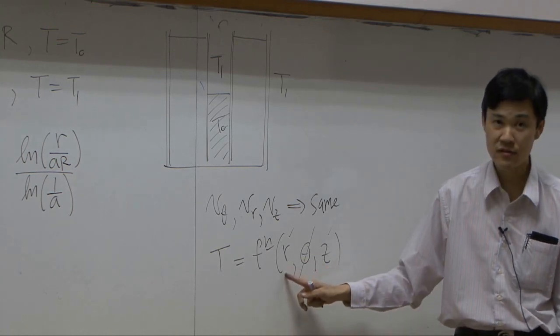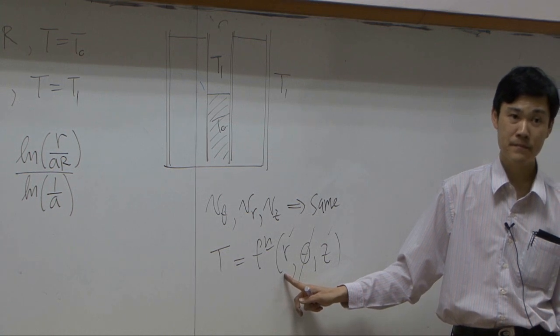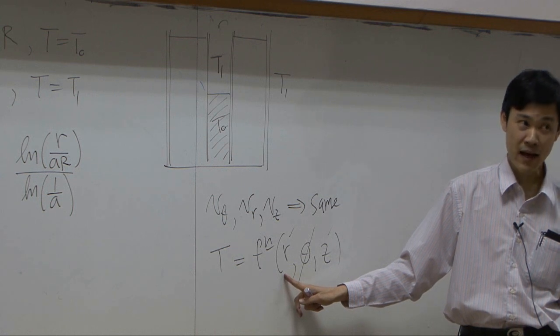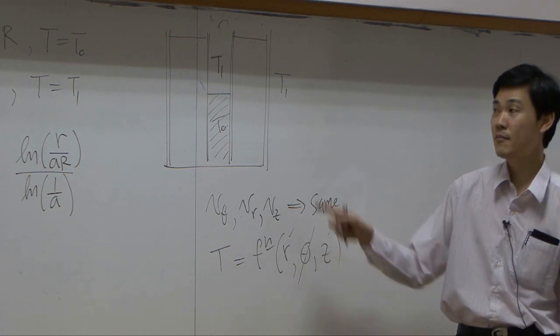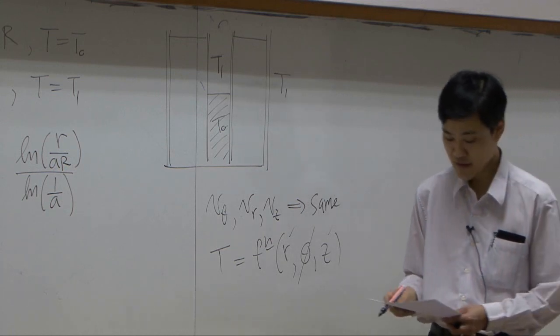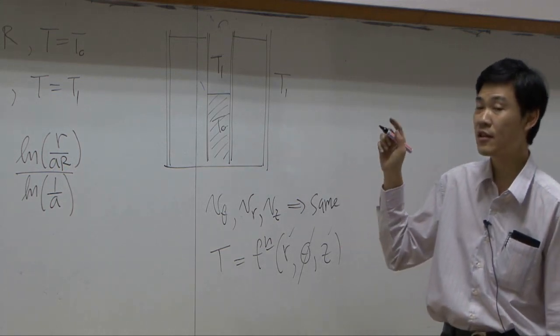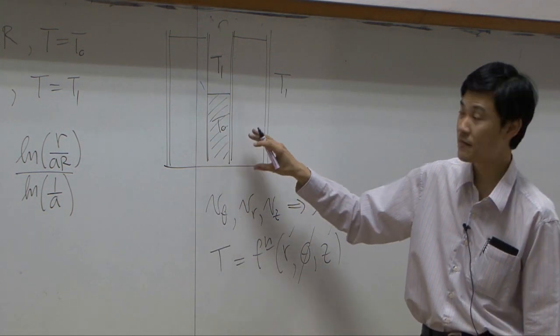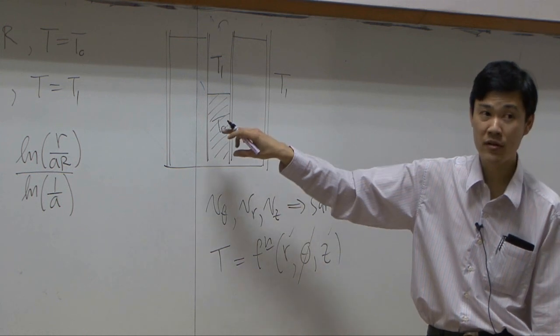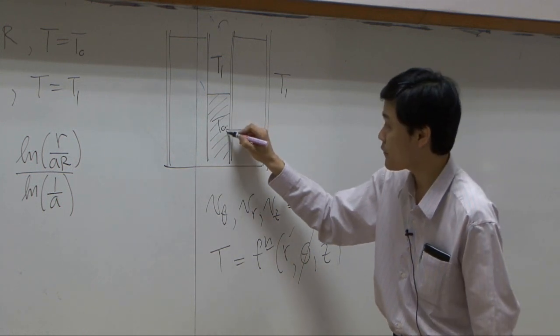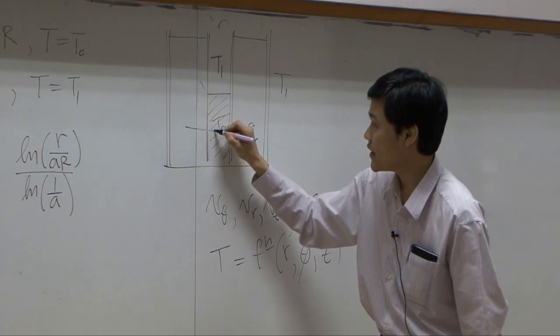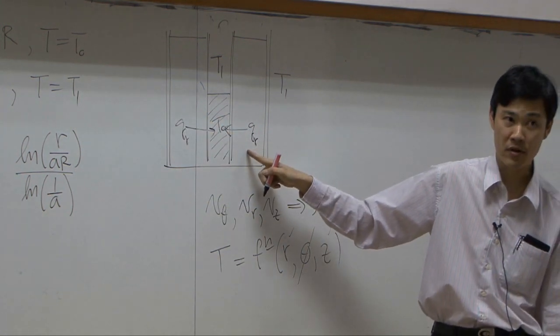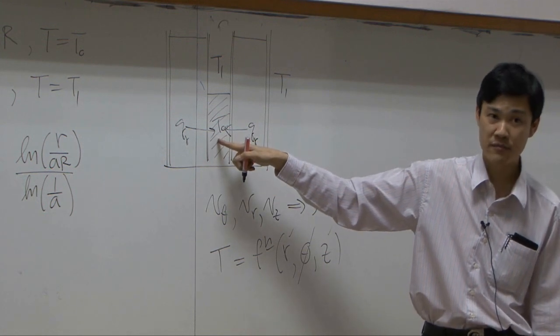So in R direction, do we have conduction? We do have conduction in R, right? But in this particular problem here, it may change. The direction of the heat transfer in the bottom layer is supposed to go from higher temperature to lower temperature. So heat transfer QR would go in this direction, from outside, which is a little bit warmer, to inside, which is ice, colder.